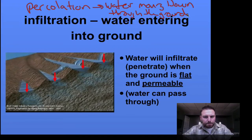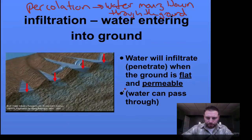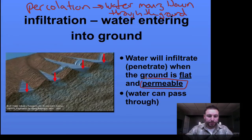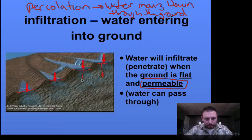Whatever the case may be, water will infiltrate or penetrate the ground when the ground is flat and permeable. Permeable basically means that there are holes or very small pores in the surface of the ground that allows the water to go through. Like we can see here with this stepped area, it's flat and on those areas we have water that can infiltrate through.